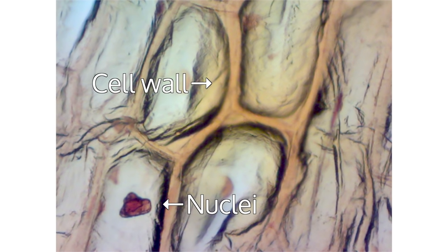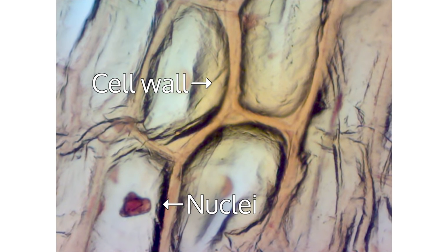Now observe under a microscope. You will be able to see the cell wall and the nuclei of the onion cells.